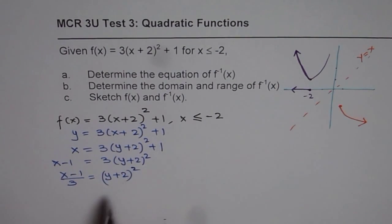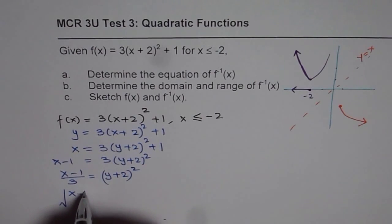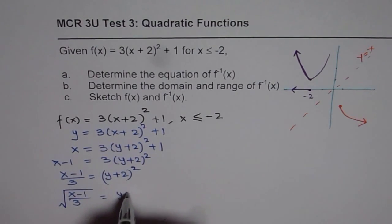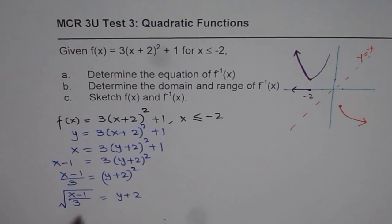Now we have to take square root. So we have √[(x - 1)/3] = y + 2. Normally, when you do square root, you have to take both plus and minus.